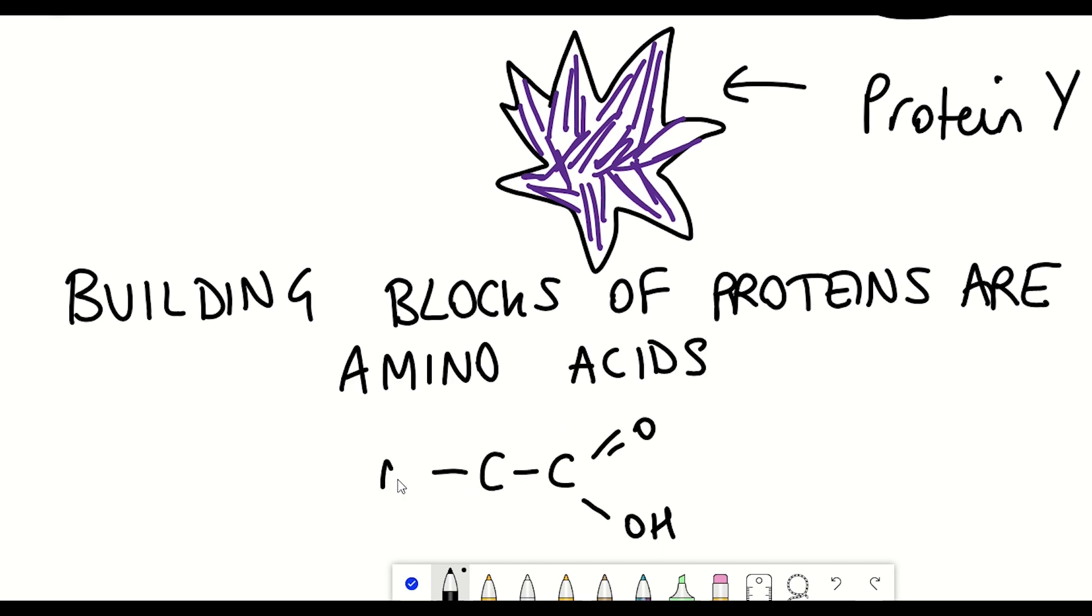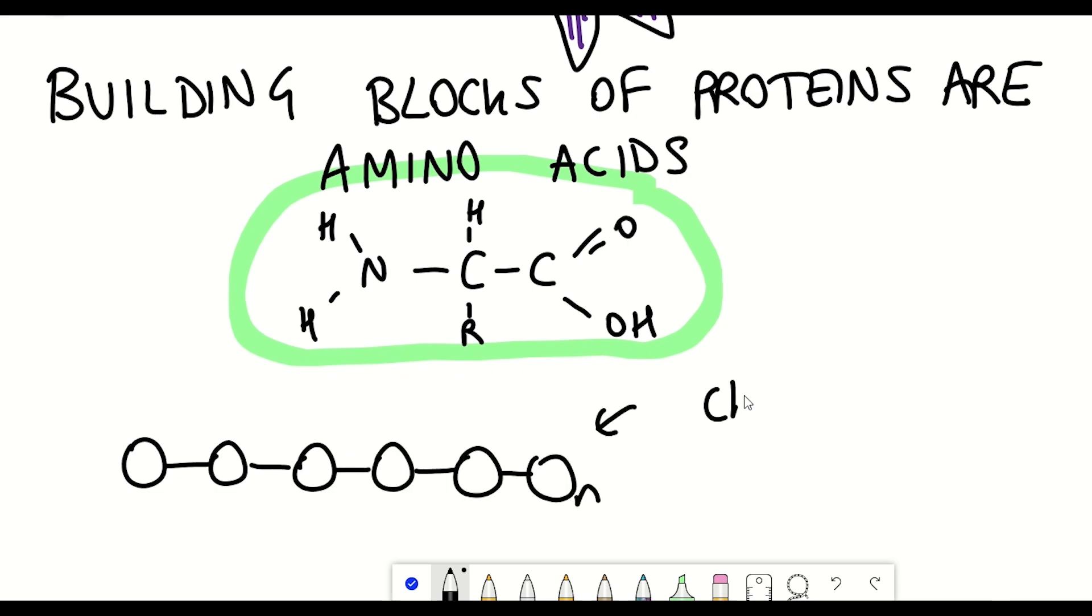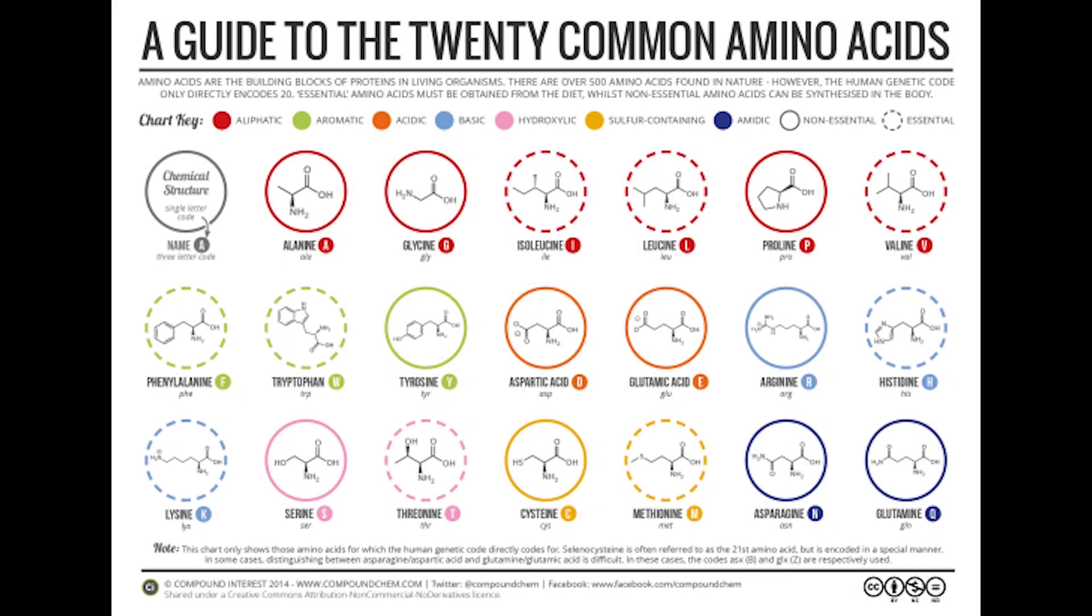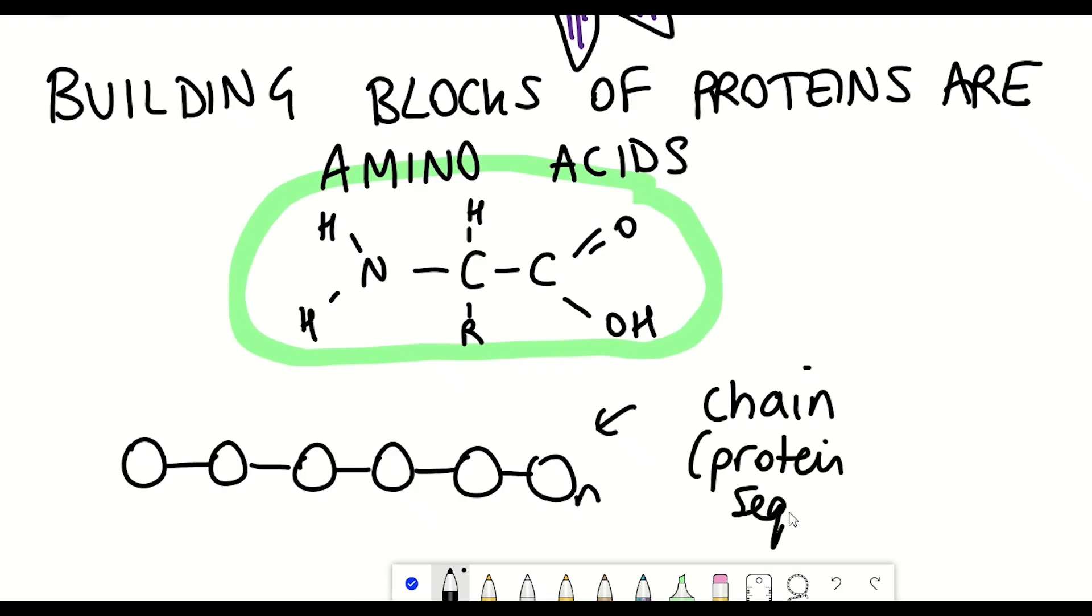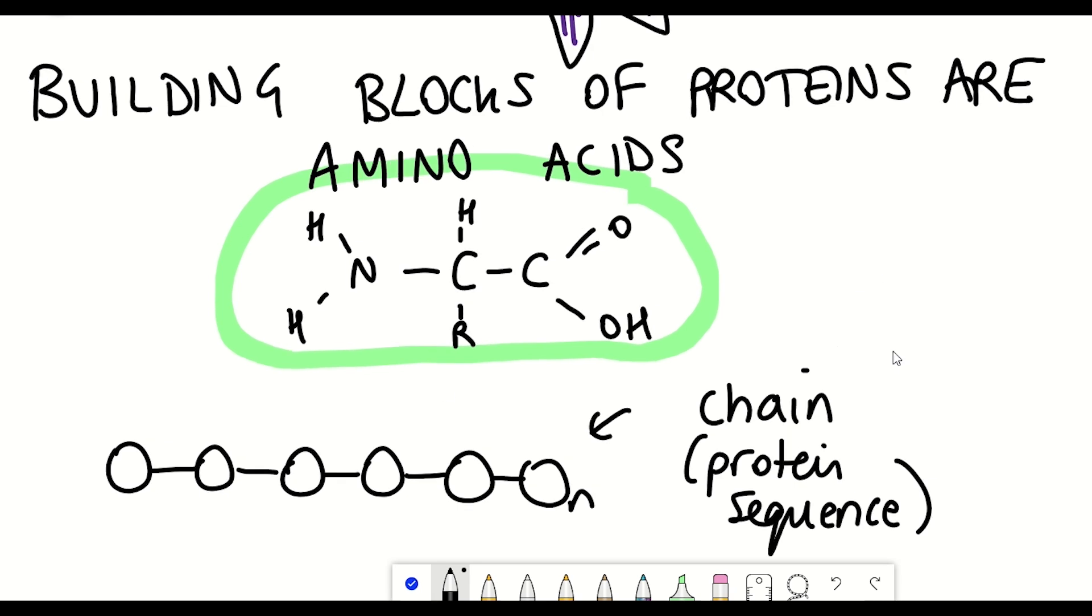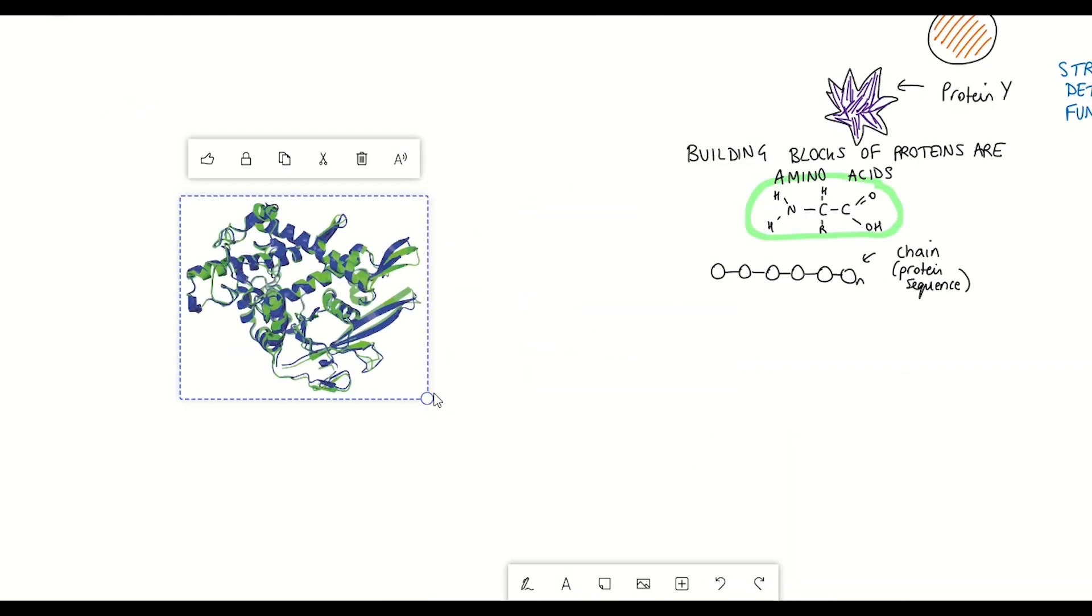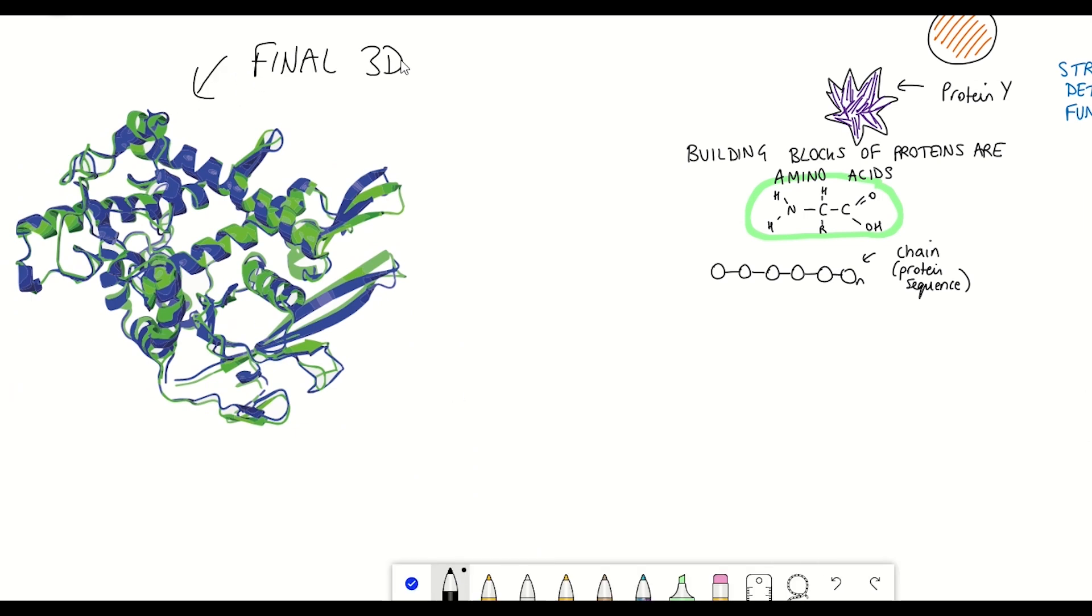All proteins are composed of a series of building blocks referred to as amino acids. There are 20 different amino acids, and the sequence of those amino acids dictates the final structure of a protein. So the protein folding problem seeks to understand how the sequence of amino acids enables the production of the 3D structure of a protein.